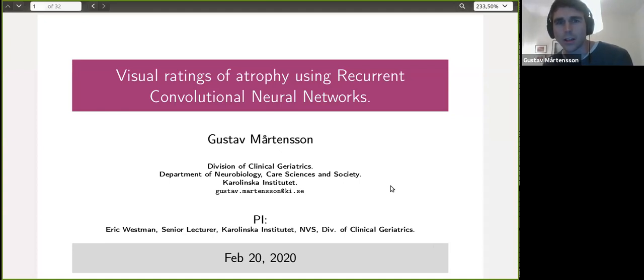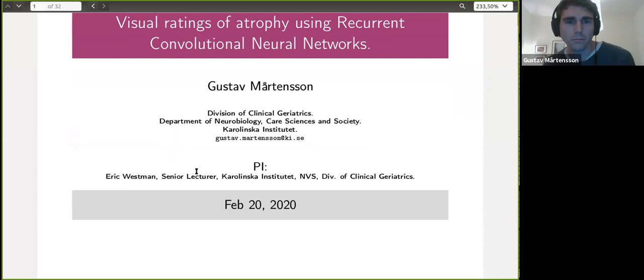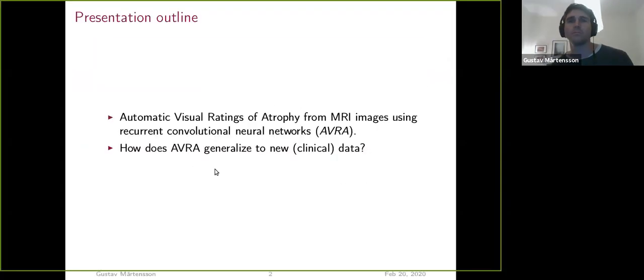I'll talk about two of my main projects, essentially in my PhD, where the first one is a deep learning project that we called AVRA, which is an acronym for the model and for the network architecture itself. But it's for automatic visual ratings of atrophy from MRI images using recurrent convolutional neural networks. And then the second study is sort of a follow-up to that because we wanted to assess how well does this perform when we look at external clinical data. So essentially looking into the domain shift within deep learning and medical imaging in particular.